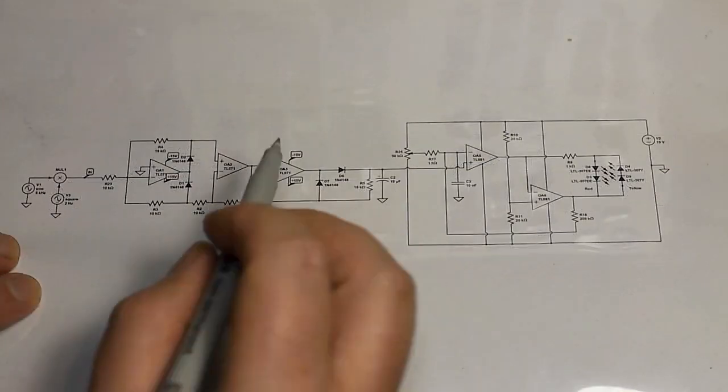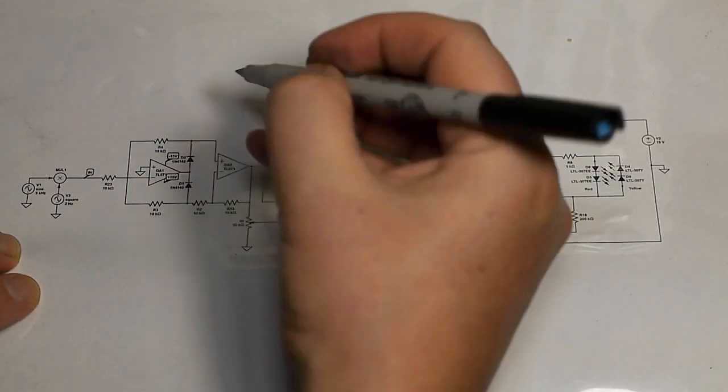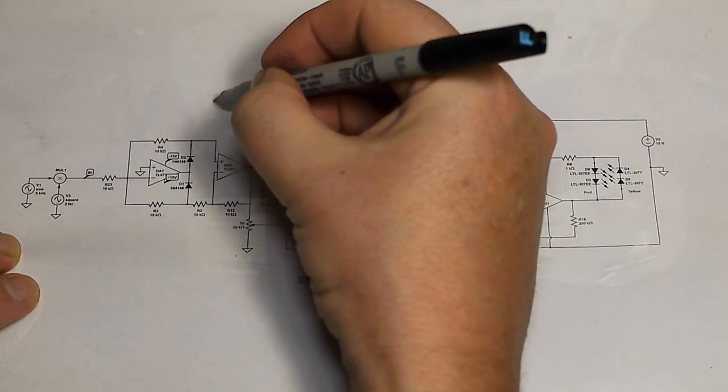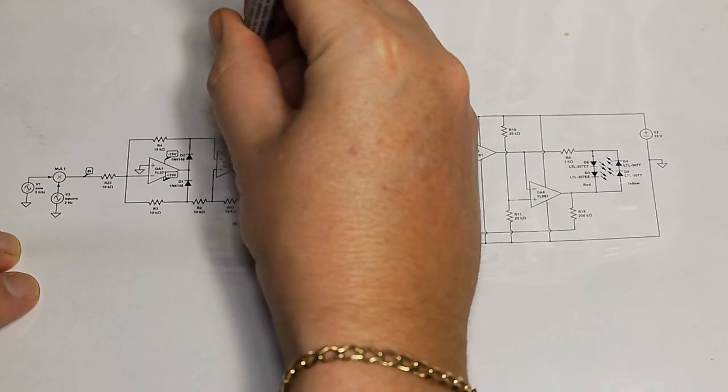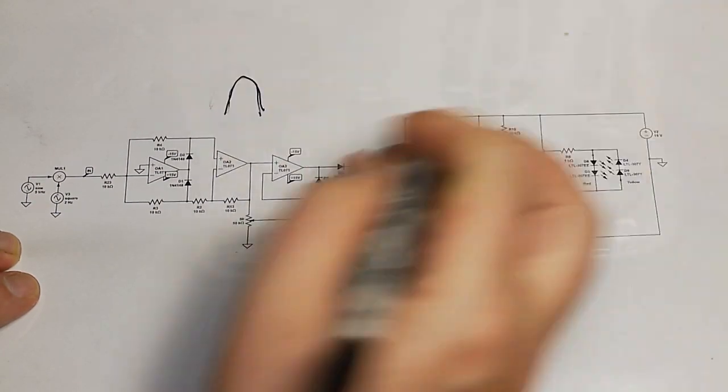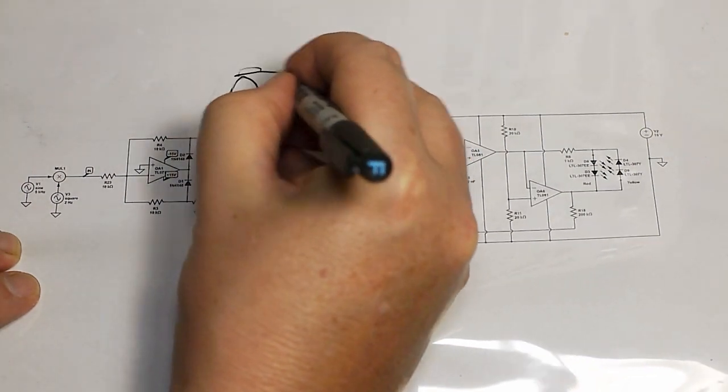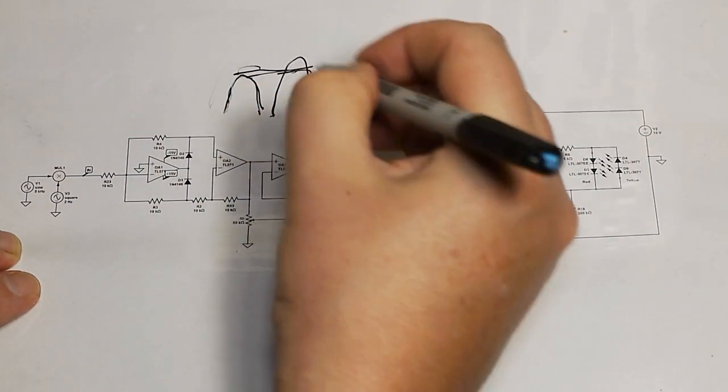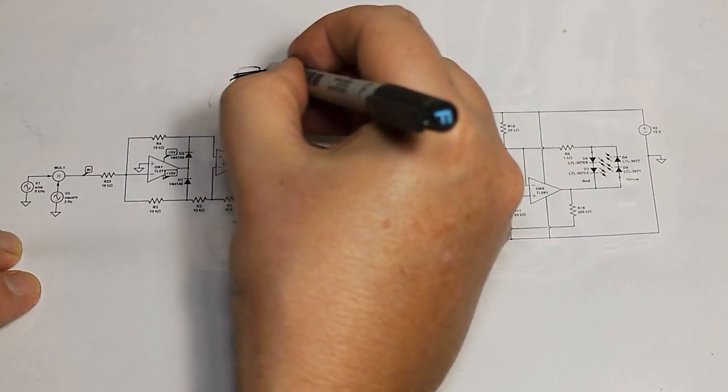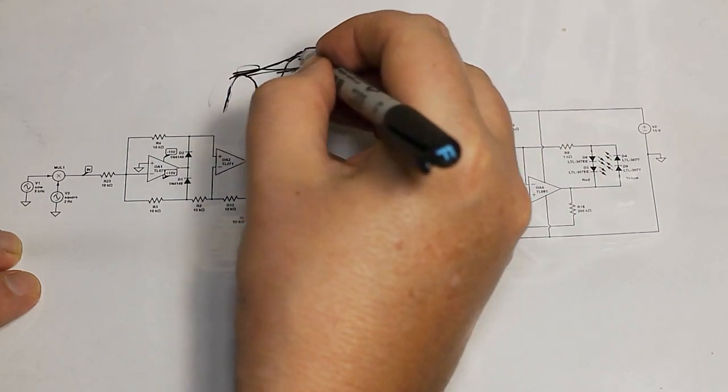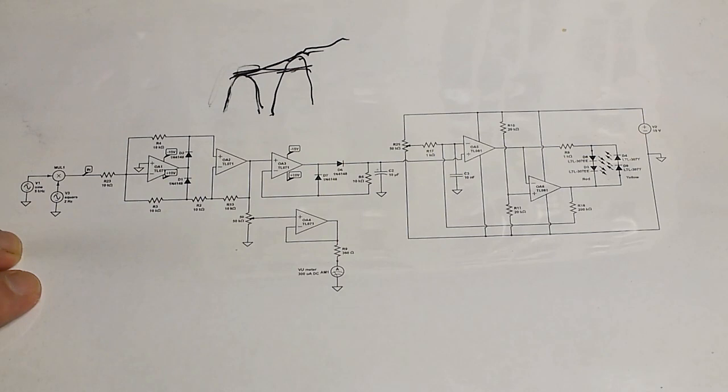Okay, so this op amp here is functioning as a peak detector basically. On the upstrokes, it's charging up this capacitor here which holds that level, and the next one might bring it up further, but it drops quite slowly. So we have an output which rides the peaks of our waveform, and that's how we do that.